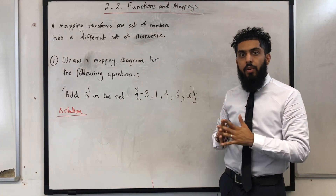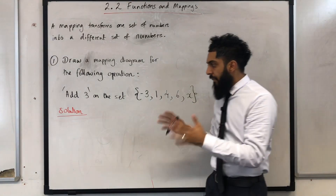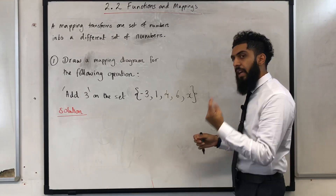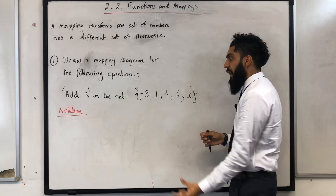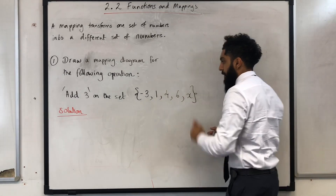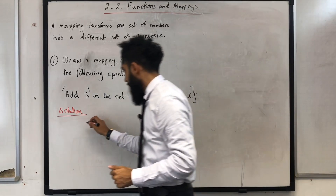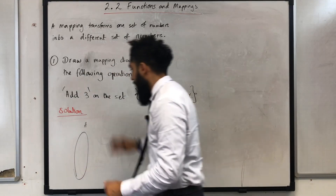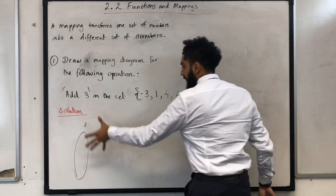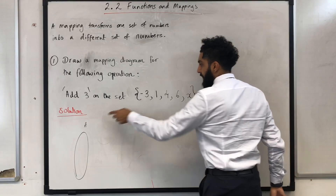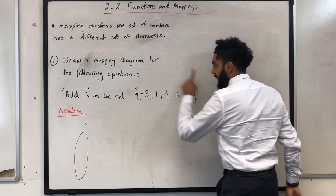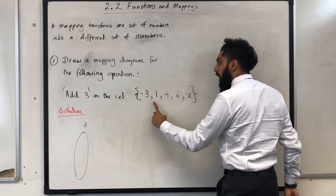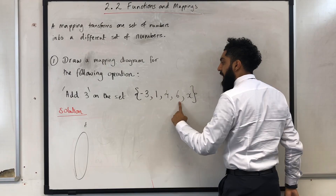When we draw a mapping diagram, the first diagram represents Set A, and Set A is your given set. I'm going to put down the elements of Set A, which are -3, 1, 4, 6, and x.